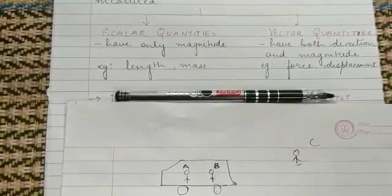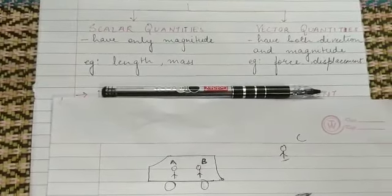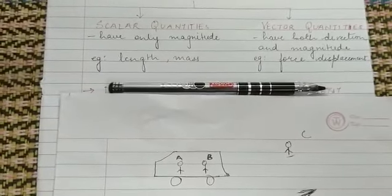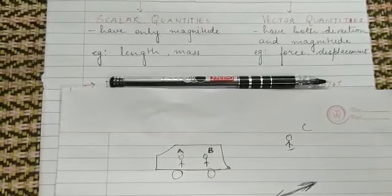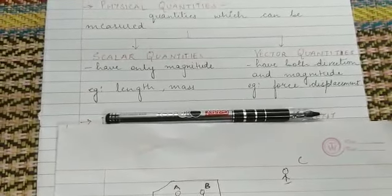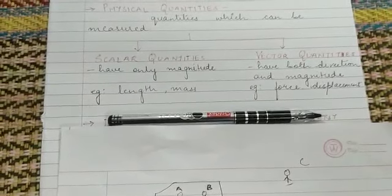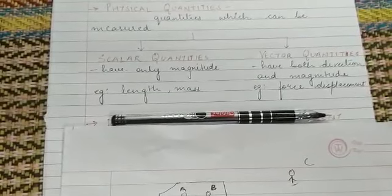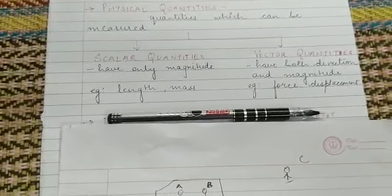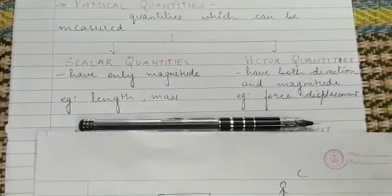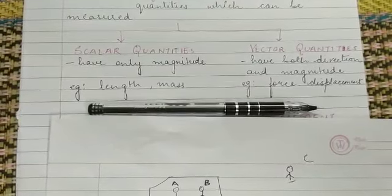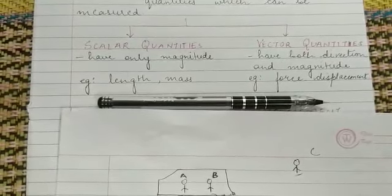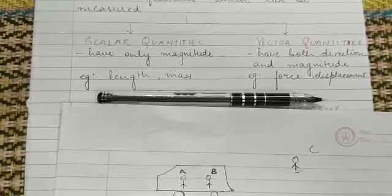Similarly, can you measure your mass? If you stand on a weighing machine, you will get your mass. For example, it comes out to be 50 kg. You will say that your mass is 50 kg. So mass is another physical quantity. Now, can you measure light? You cannot measure light, but you can measure the intensity of the light. So intensity of light is a physical quantity. These physical quantities are categorized into two types: first is the scalar quantity, second is the vector quantity.